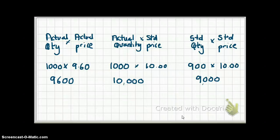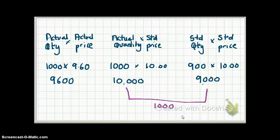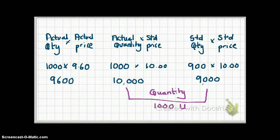Now that we have these three numbers, we can calculate the quantity variance and the price variance. The quantity variance is the difference on the right-hand side: $1,000. Since direct materials are a cost, we expected $9,000 but it ended up being $10,000. Therefore, this $1,000 is an unfavorable variance. This is your direct material quantity variance.